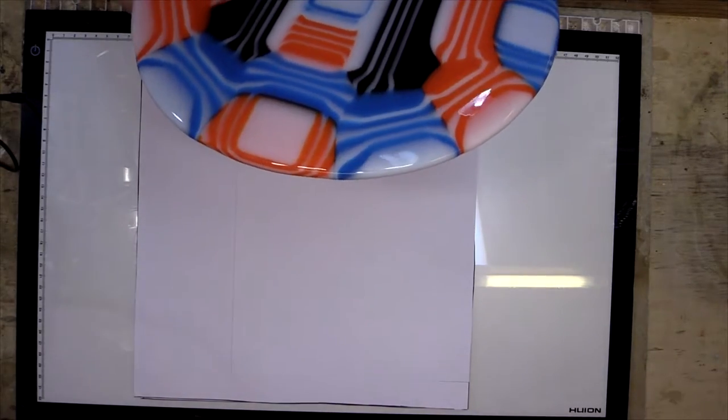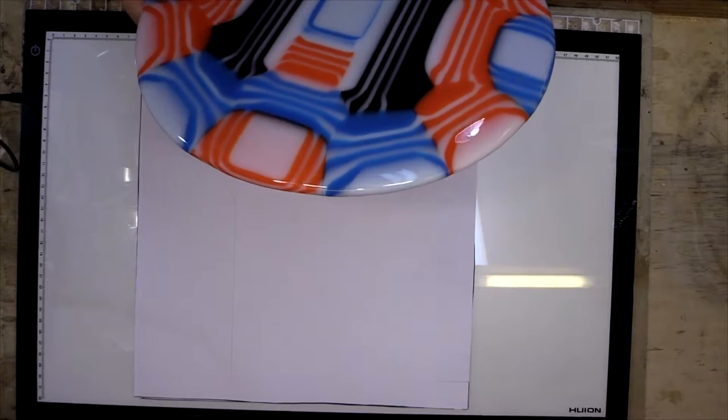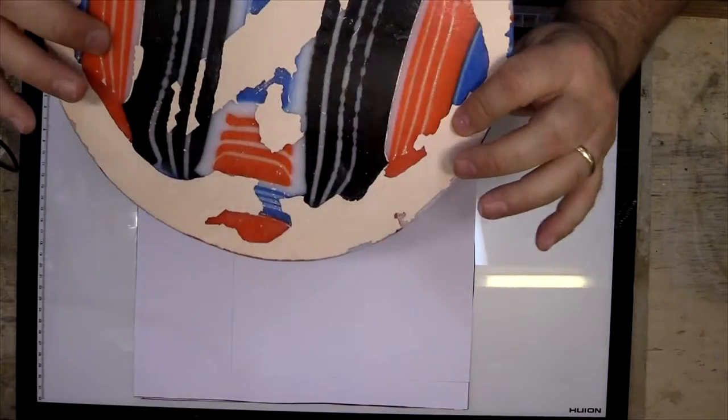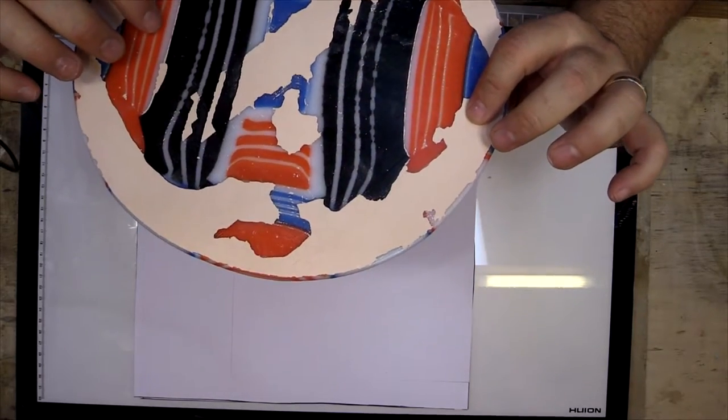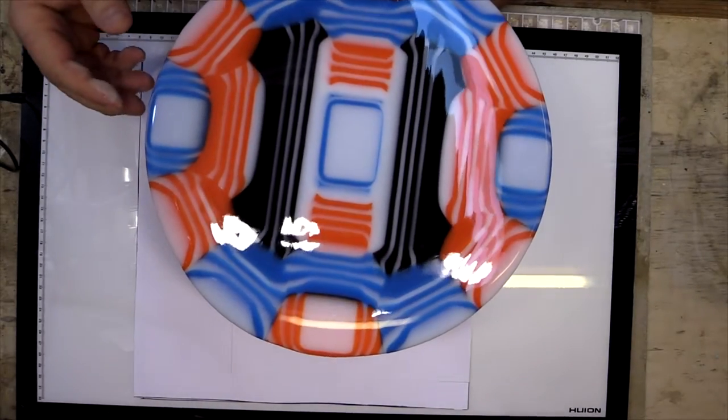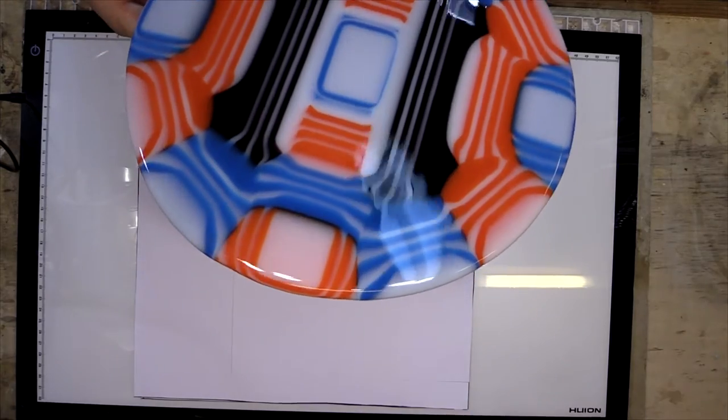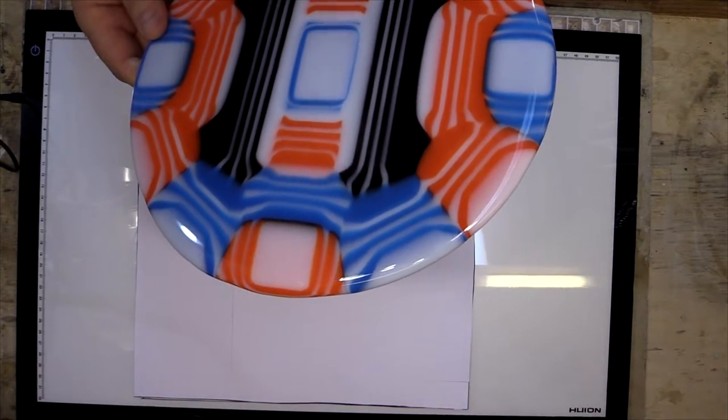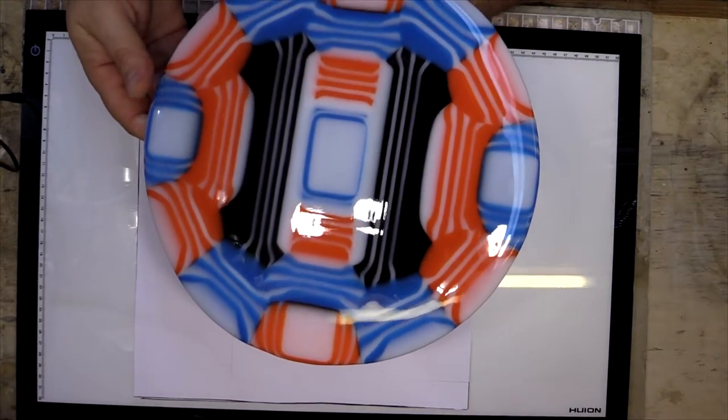Once I get the kiln wash off the back of this, I'll have to soak this in vinegar to do that. I'll probably end up slumping this, and then, just as a precaution, I'll just let the piece age and see what happens.